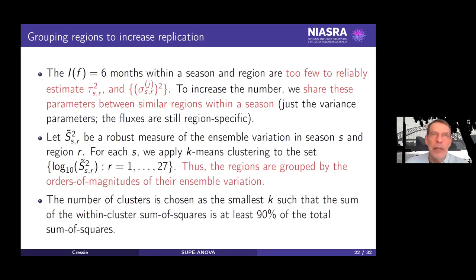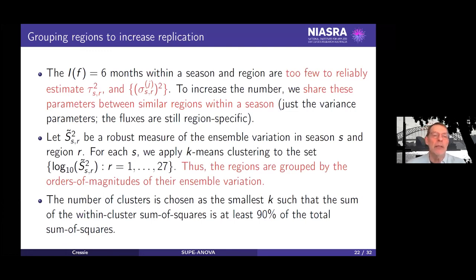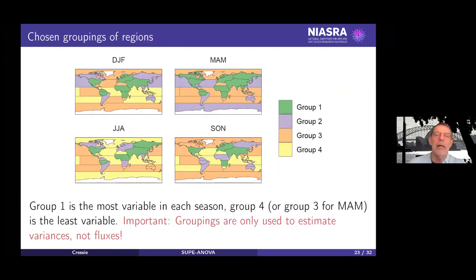There is a wrinkle in estimating the variances: in this MIP, because we only have two years of data, we don't have enough replication to get decent estimates. So we did a k-means clustering, essentially based on the underlying variability of each of the groups within each region and within each season. When we clustered, we ended up with regions grouped not based on their climatology or their fluxes, but based on their variability. I'll show you a picture of the different groupings of regions that we came up with.